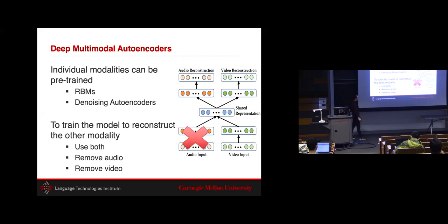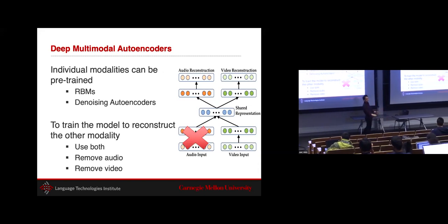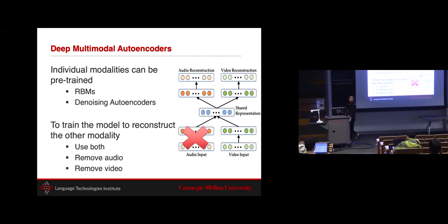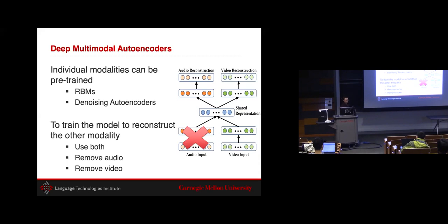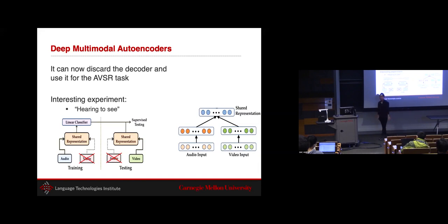You can also incorporate denoising autoencoders and other unsupervised methods. One particularly useful technique was dynamically dropping out different modalities during training — sometimes using both audio and visual to reconstruct, sometimes dropping one to force the model to predict both from just one. This allows the model to rely on a single modality at test time. Interestingly, a 'hearing to see' experiment showed that training with audio only but using a shared representation still enabled reasonable predictions from video at test time.